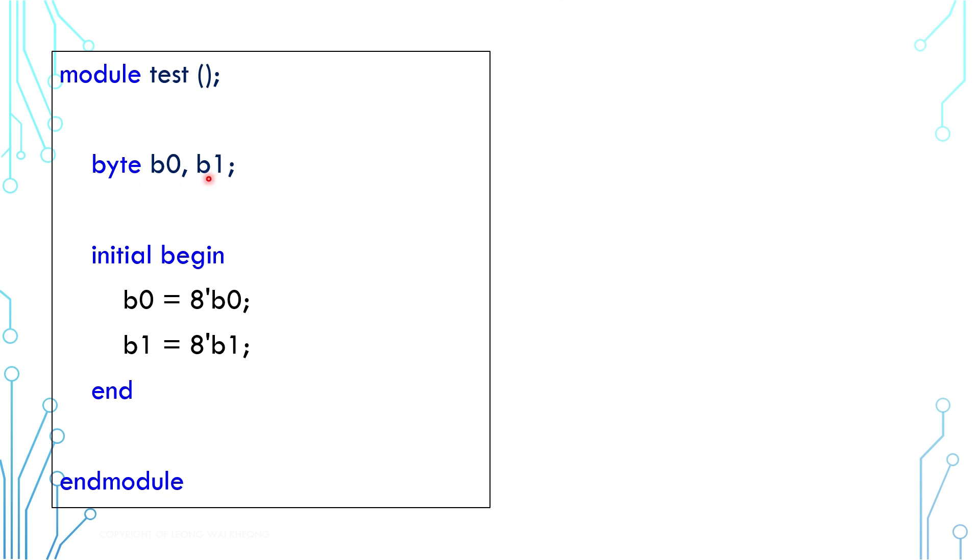There are two bytes, b0 and b1, in this simple code. In the initial block, they are set to 0 and 1, respectively.